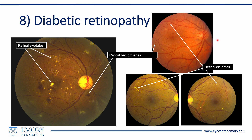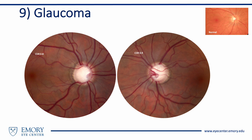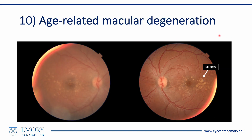Diabetic retinopathy must not be missed on fundus photographs. Observe various findings such as retinal exudates, retinal hemorrhage, and microaneurysms. These patients must be referred to ophthalmology for outpatient consultation. In fundus photographs of a 65-year-old male with progressive peripheral vision loss, the optic discs show an increased cup-to-disc ratio of approximately 0.8 on the right and 0.9 on the left. This patient has glaucoma and must be referred to ophthalmology. A 70-year-old woman with slowly progressive central vision distortion shows macular drusen in both eyes, consistent with age-related macular degeneration.